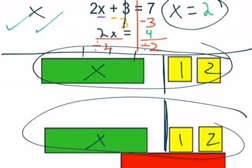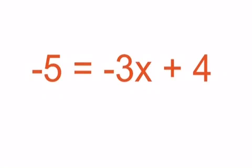Now I want you to try this. I'll give you a fresh equation, but one that's a bit more challenging: negative 5 equals negative 3x plus 4. The equals sign and the negative 5 are by themselves on the left side, but you're going to do it the same way as we did the last one. Don't let that throw you off. Go ahead and try to model this one, solve for x, and model it with the algebra tiles.